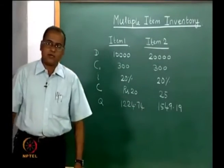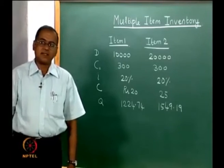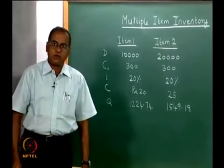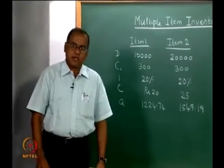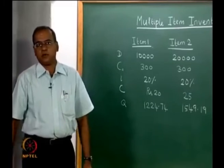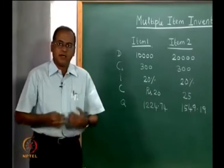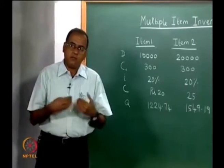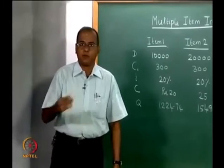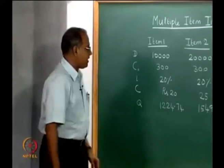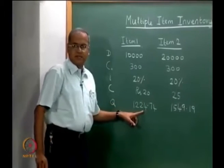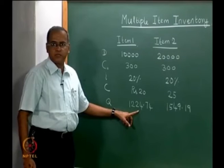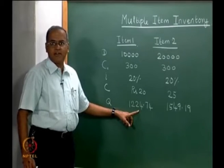In the last lecture, we looked at a situation where there was a limit or restriction on the total number of orders. We also derived an expression and showed that if there is a restriction on the total number of orders and if that constraint is binding, then the order quantities of both items increase in the same proportion. We are now trying to place another constraint — a restriction on the value of money being locked up in the average inventory.